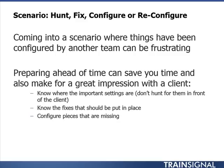Some common problems include missing send connectors — that's why mail isn't flowing; accepted domain not configured; email address policy not configured; anonymous access not established on the receive connector; or the person didn't know how to configure the MX records on the external DNS server. Anyone who has worked in the Exchange world for a while typically has a list of things in their head as far as what to look for. Reconfiguring sometimes means deleting and replacing misconfigured pieces. Let's jump over to our Exchange servers in the lab and take a look at transport settings — transport rules, accepted domains, and email address policies.